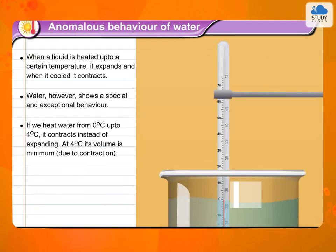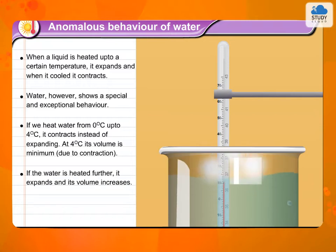If we heat water from 0 degree Celsius up to 4 degree Celsius, it contracts instead of expanding. At 4 degree Celsius, its volume is minimum due to contraction. If the water is heated further, it expands and its volume increases.